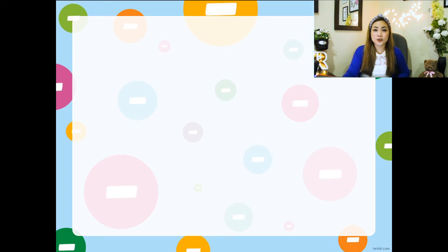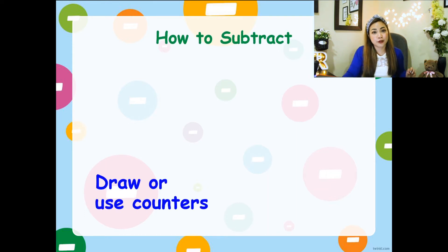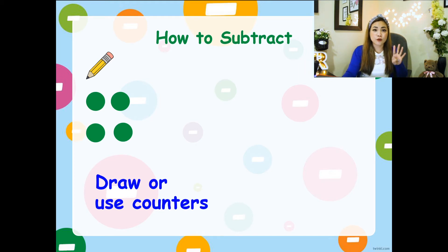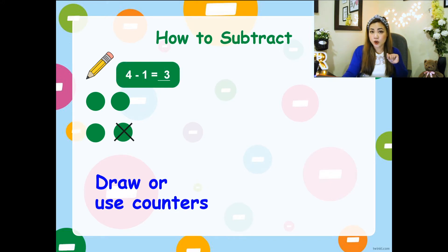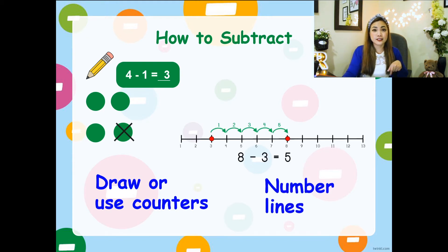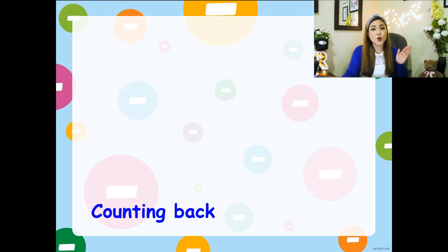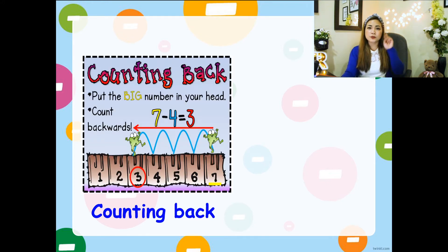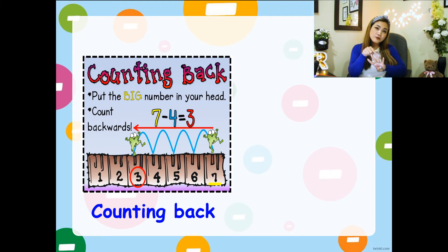Now, let me just remind you how to do subtraction. There are many ways. First of all, you can draw or use counters. For example, how many are left if I take away one from four? I'm gonna draw four circles and then I will cross out one from four. Four minus one equals three. Or I can also use a number line — you just have to jump backwards. Or I can directly use counting back. For example, seven minus four. We put seven in our head and four in our hands and we count back: seven, six, five, four, three. The last number you said is three.